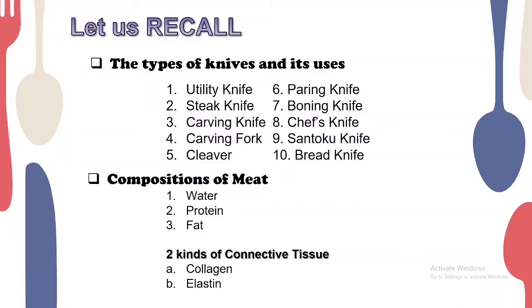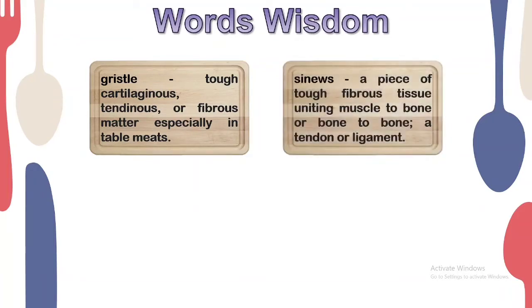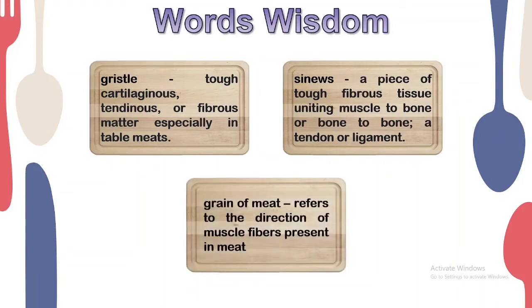To introduce our new lesson, let us encounter some new words. First is gristle — tough cartilaginous, tendinous, or fibrous matter especially in table meats. Second is sinew — a piece of tough fibrous tissue uniting muscle to bone or bone to bone; a tendon or ligament. Third is grain of meat — refers to the direction of muscle fibers. These are the words we need to look out for in this video lesson.